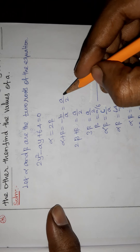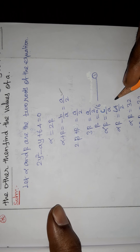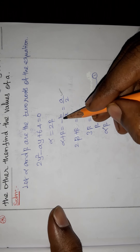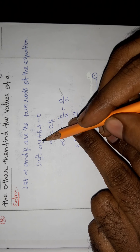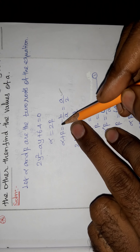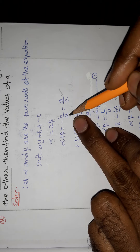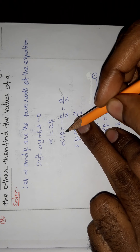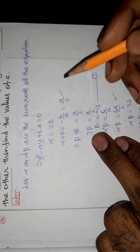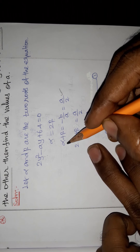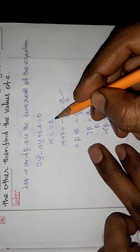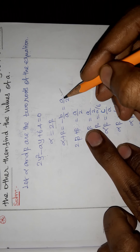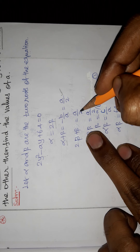First we find the sum of the roots. Alpha plus beta equals minus b by a. Here b is the coefficient of y, so minus of minus a divided by a, where a is the coefficient of y², that is 2. So alpha plus beta equals a by 2. Replacing alpha with 2 beta: 2 beta plus beta equals a by 2.